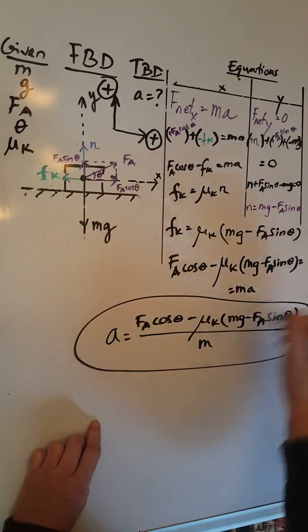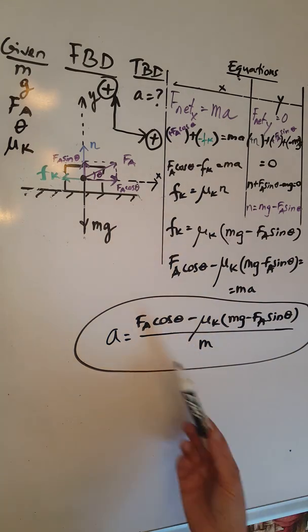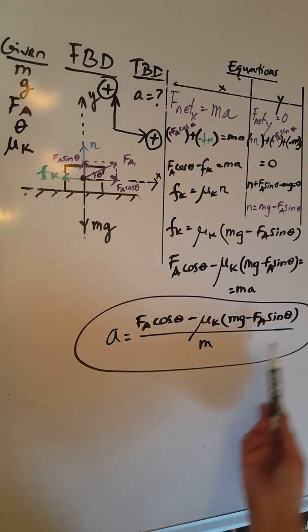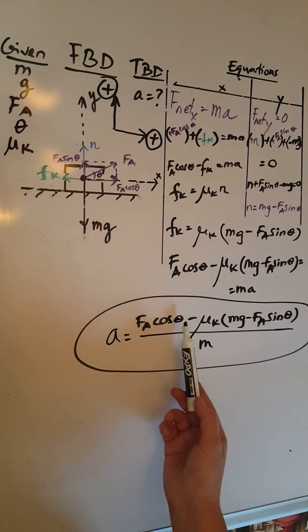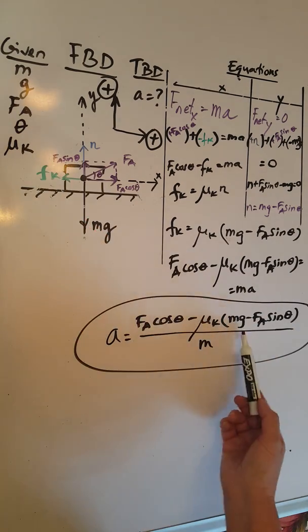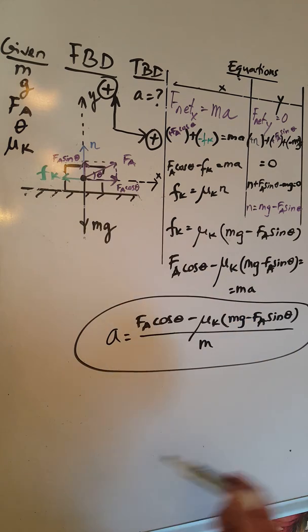Circle. That's my final answer. Make sure that everything in this expression, in this final expression, is in my given. FA is there, theta is there, G and M and mu K are there too. So this is my final answer.